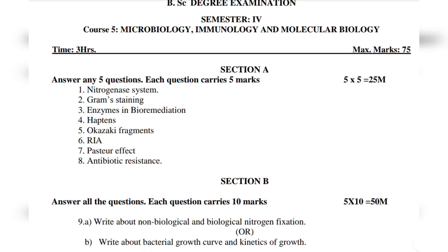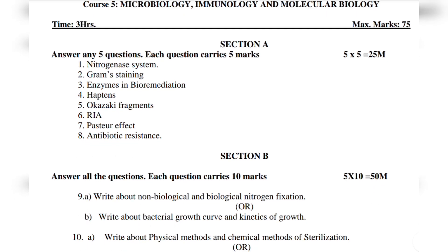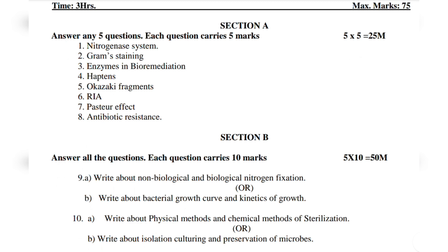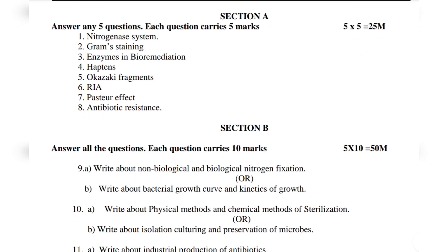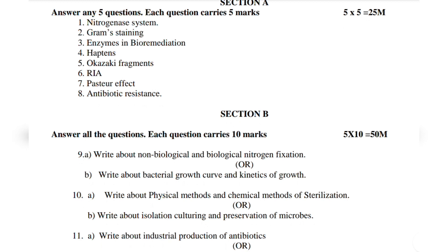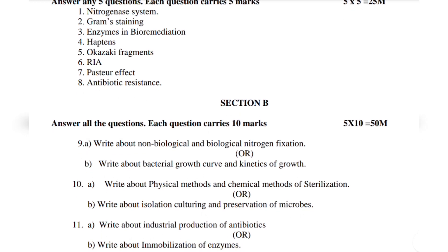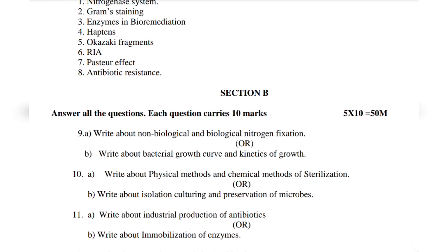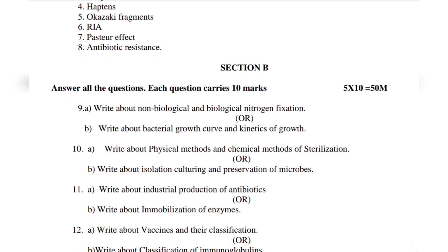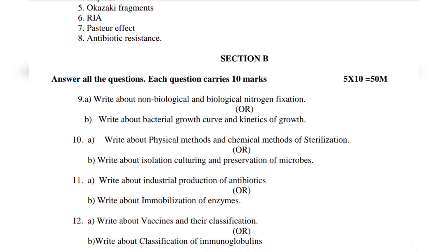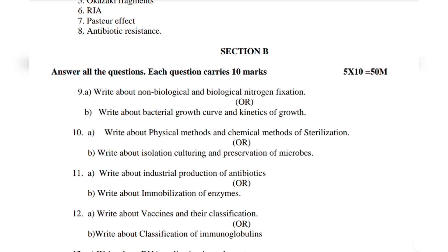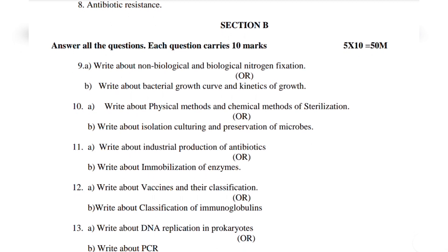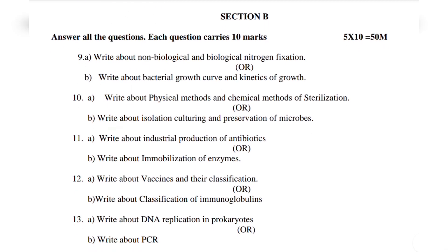10th year: write about bacterial growth curve and kinetics of growth. 10th year: write about physical methods and chemical methods of sterilization. 11th year: write about isolation, culturing and preservation of microbes. 11th year: write about industrial production of antibiotics. 12th year: write about immobilization of enzymes. 12th year: write about vaccines and classifications. 12th/13th year: write about classification of immunoglobulins. 13th year: write about DNA replication in prokaryotes. 13th year: write about PCR.